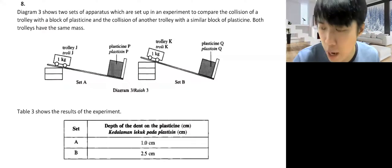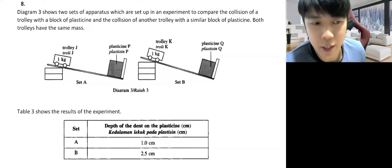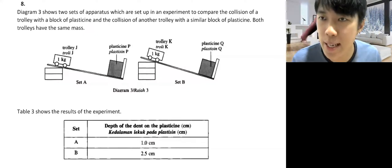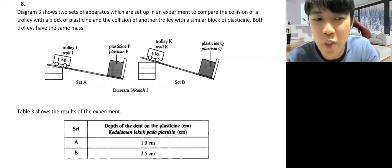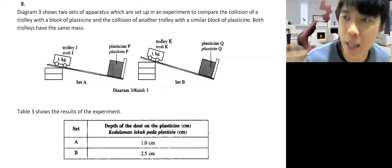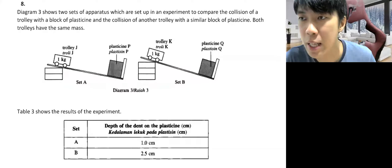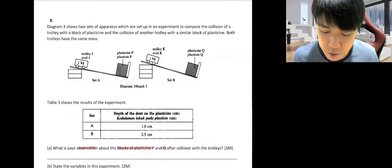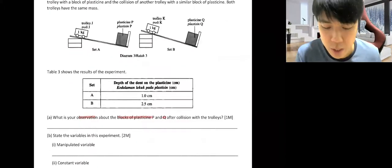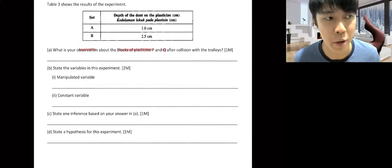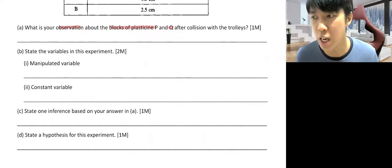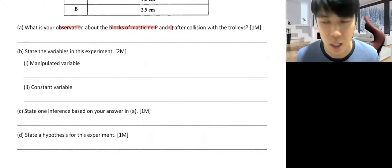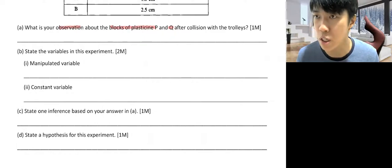The answer sounds like: 'The dent formed on the block of plasticine Q is deeper than the dent formed on block of plasticine P.' That's your observation — what you will see with your eyes. For part B, the manipulated variable — since we're testing on velocity — you can write 'velocity of the trolley' or just 'velocity.' And the constant variable, since you can only test one factor at a time, would be the mass of the trolley.